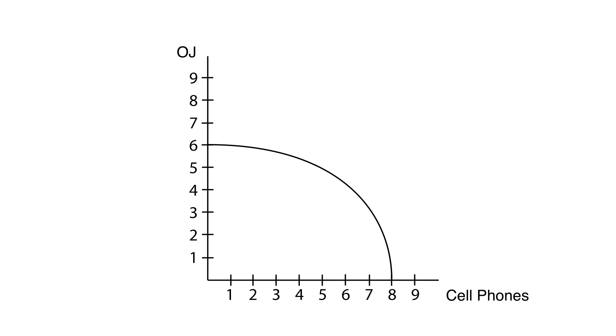When the PPF was a straight line, the opportunity cost of making a bit more of something was constant. That is, making one more cell phone always meant giving up three-fourths of an orange juice.